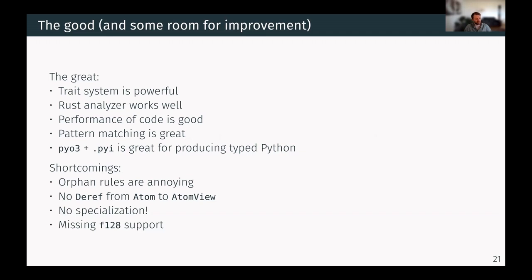Sadly, there's also some shortcomings. Orphan rules are extremely annoying. There's no deref from atom to atom view. And the killer is actually specialization. There's many, many cases where I need specialization and it just isn't there yet. So I really hope that it will be added soon, but who knows. And then finally, there's no f128 support yet, but it's being worked on.